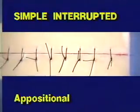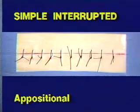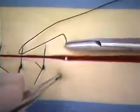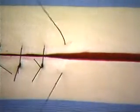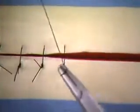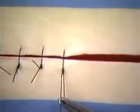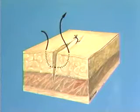The first suture pattern to be demonstrated is the simple interrupted. It is an appositional suture pattern. The simple interrupted suture is made by introducing the needle through the tissue approximately 5 millimeters lateral to the incision, inserted through the tissue on one side and passed through the opposite side perpendicular to the incision, taking the same amount of tissue in a single bite and then tied. The illustration shows the finished simple interrupted suture.